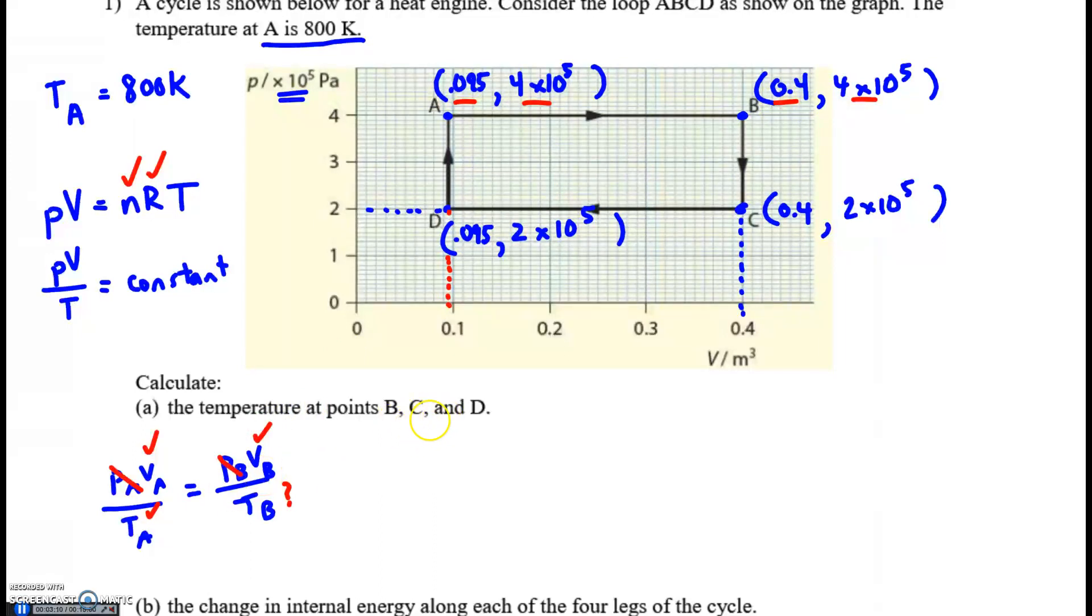We do the same thing for C and D. You can choose any two. For going B to C, pressure times volume over temperature at B equals pressure times volume at C over temperature at C. When you plug in the values, they have the same volume at B and C, so those values are going to cancel.